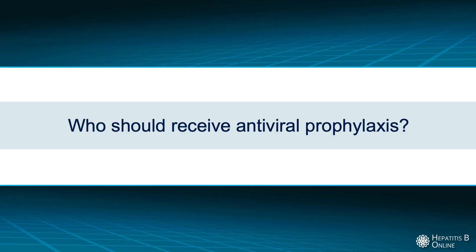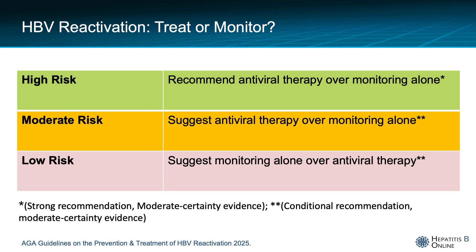So once you have assessed the risk of hepatitis B reactivation in your patient, how do we decide who should receive antiviral prophylaxis? The latest American Gastroenterology Association guidelines have simplified the recommendations to favor treatment in those in the high or moderate risk categories, with a stronger recommendation for those in the higher risk category based on the quality of evidence. Low-risk individuals can undergo monitoring alone. There may be patients who place a higher value on avoiding long-term use of antiviral therapy and its associated costs and place a lower value on avoiding the small risk of hepatitis B reactivation. These individuals may reasonably select active monitoring over antiviral prophylaxis, but clinicians should carefully consider the feasibility and likelihood of adherence to long-term monitoring.